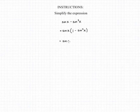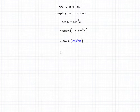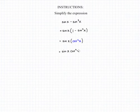Now, 1 minus sine squared x is a Pythagorean identity, and we can use that to substitute in cosine squared x. And from here, there's nothing else we can do to simplify our expression, so we have our final answer: sine x times cosine squared x.